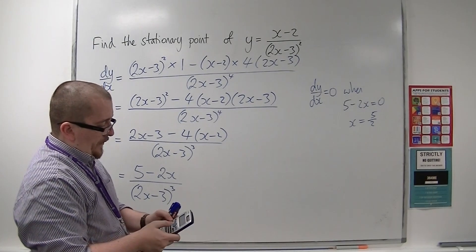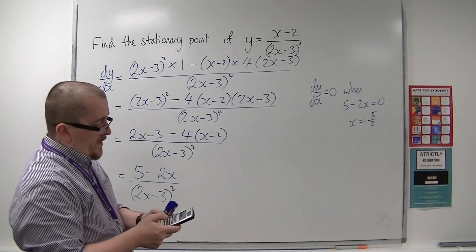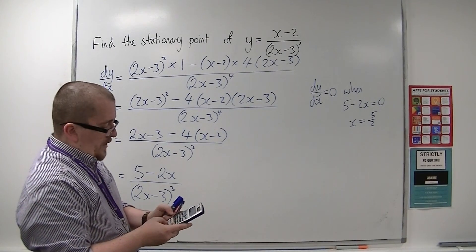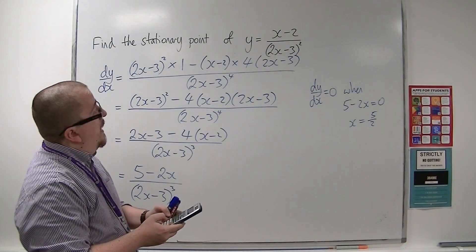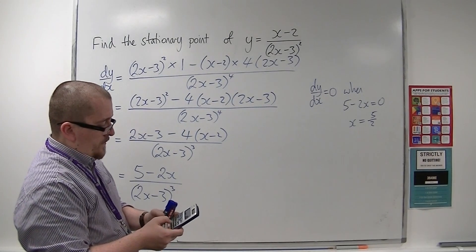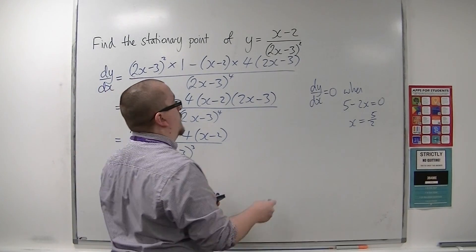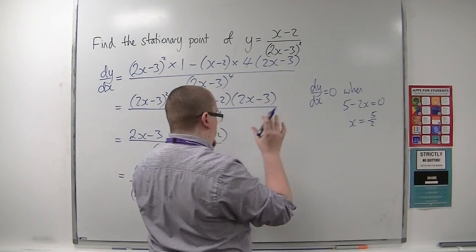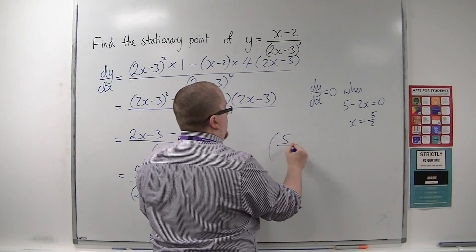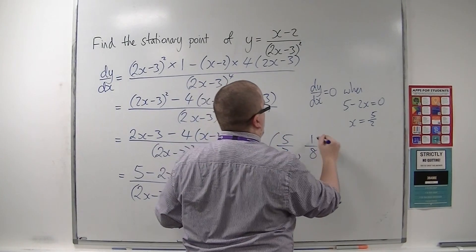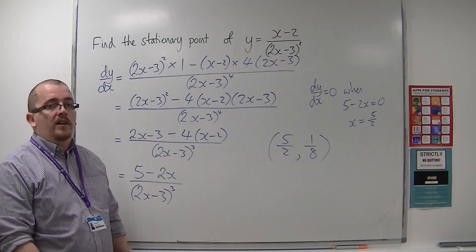So substituting x equals 5 halves: 5 halves take away 2, divided by 2 lots of 5 halves take away 3, all squared. That gives 1 eighth. So when x is 5 halves, y is 1 eighth. And so that is the location of the singular stationary point for this curve.